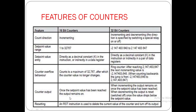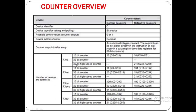Counter output: once the set point value has been reached, the output remains on in a 16-bit counter. In a 32-bit counter, when incrementing the output remains on once the set point value has been reached. When decrementing, the output is reset — switched off — once the value drops below the set point value. An RST instruction is used to delete the current value of the counter and turn off its output. The RST command is used for both 16-bit and 32-bit counters to reset them.